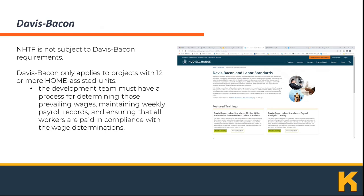For HOME funds, Davis-Bacon only applies to projects with 12 or more HOME-assisted units. The Davis-Bacon Act requires determination of and payment of federal prevailing wages on covered projects. If Davis-Bacon applies, the development team must have a process for determining prevailing wages, maintaining weekly payroll records, and ensuring all workers are paid in compliance with the wage determinations.